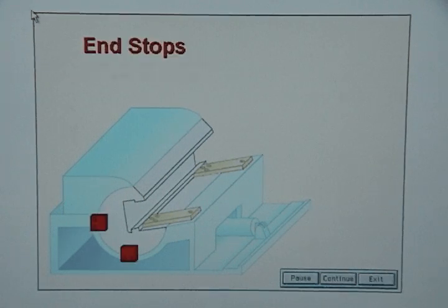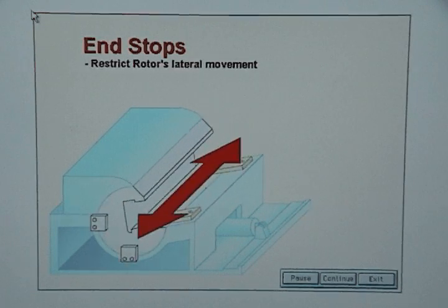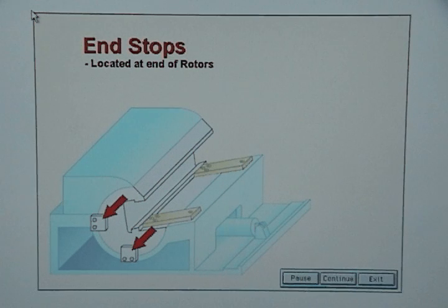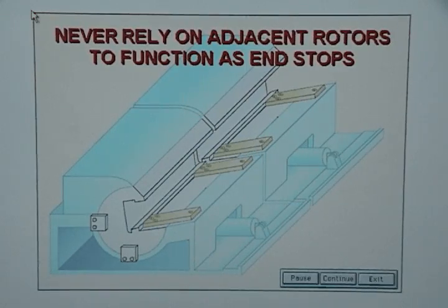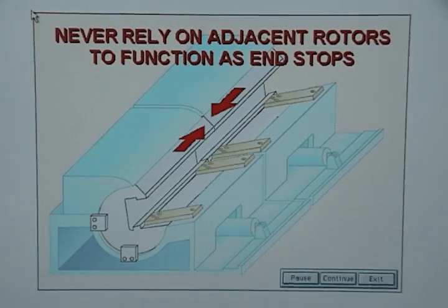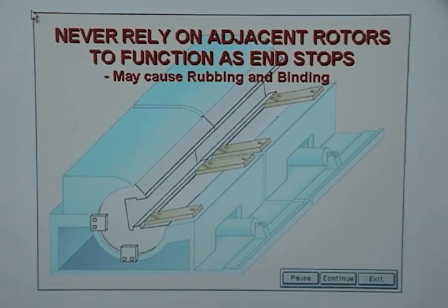End stops restrict the rotor's lateral movement. They can be located at the end of rotors or along the rotor. Die makers should never rely on adjacent rotors to function as end stops because doing so could cause the rotors to rub against each other and bind.